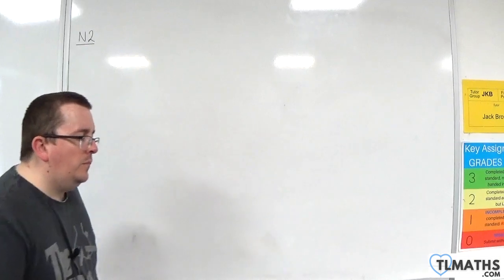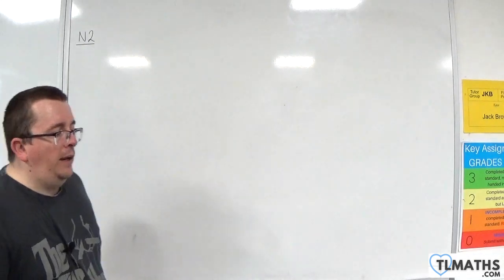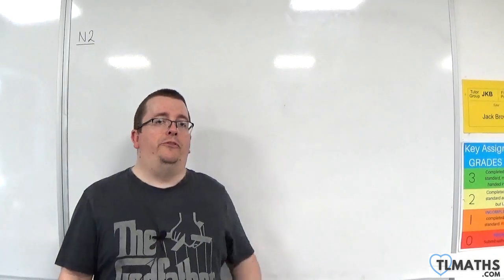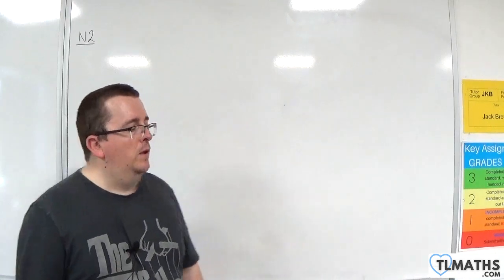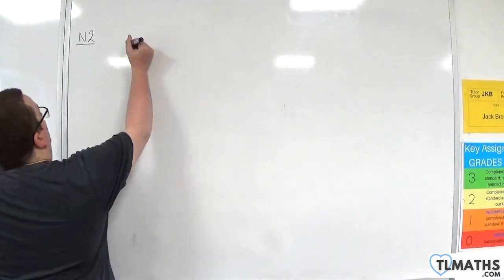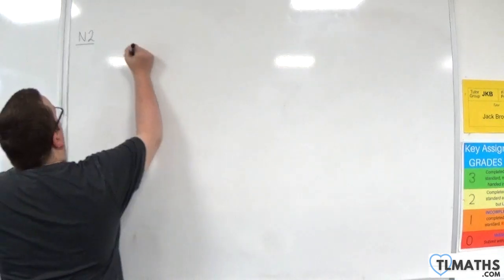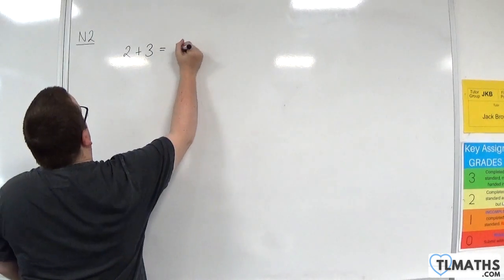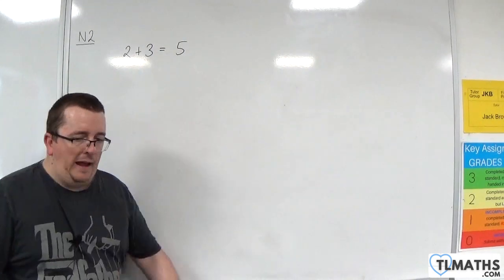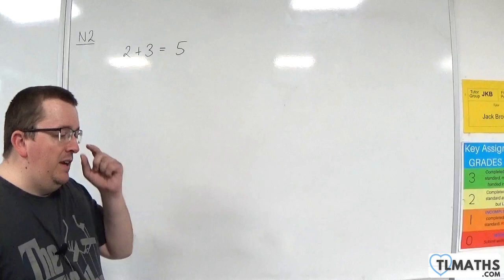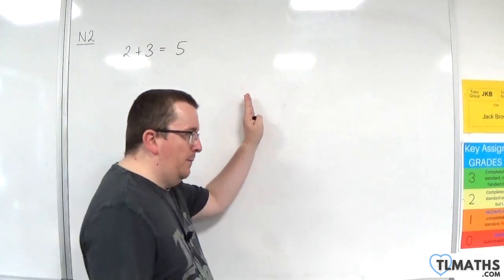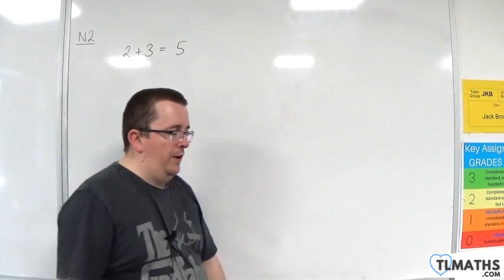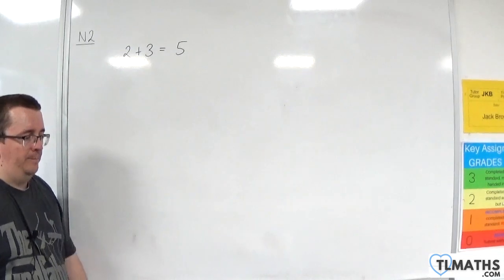All I'm going to do in this video is work with the numbers 2 and 3. So let's start off with 2 plus 3, which we of course know is 5. And we can see it on a number line — we start at 2, and we add 3: 1, 2, 3, and we get to 5.